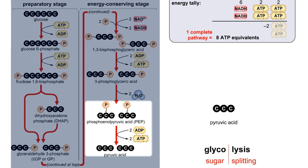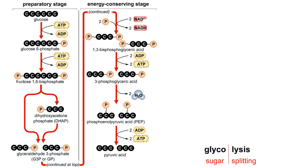During glycolysis, the cell uses the energy available in glucose to produce a net of two ATP molecules and two NADH molecules.